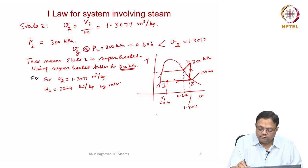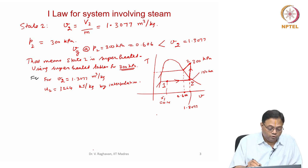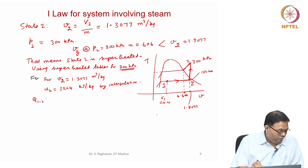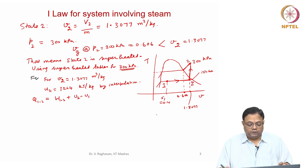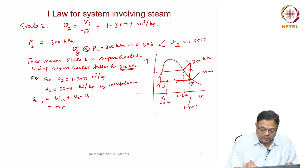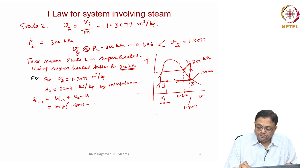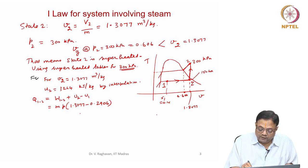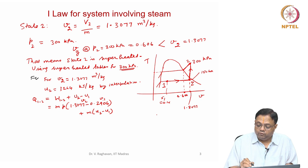Now, knowing both states, we calculate Q₁₂: Q₁₂ = W₁₂ + (U2 − U1). The work W₁₂ = m × P × (v2 − v1) at constant pressure = m × P × (1.3077 − 0.2906).